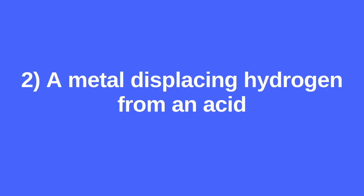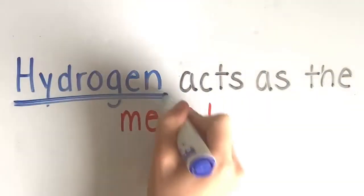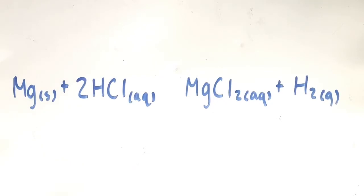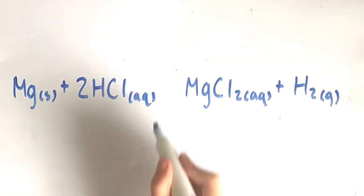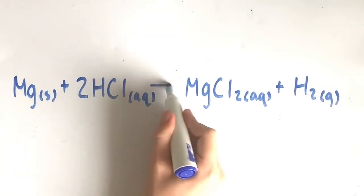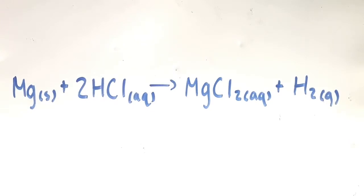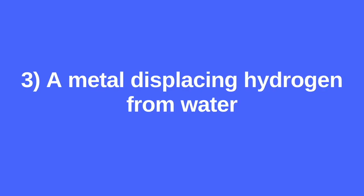Secondly, we have a metal displacing hydrogen from an acid. Hydrogen acts like the metal that is being displaced. An example would be magnesium plus hydrochloric acid yields magnesium chloride plus hydrogen.